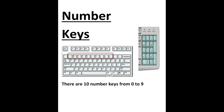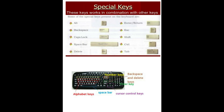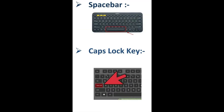The next one is special keys. There are many special keys, and each one of them has its own function. Now let us talk about some special keys. The first one is space bar — space bar is the longest key on the keyboard, which gives blank space between two words.